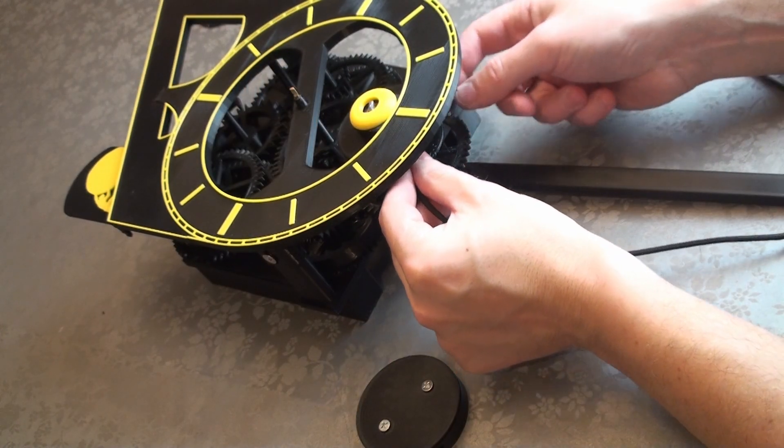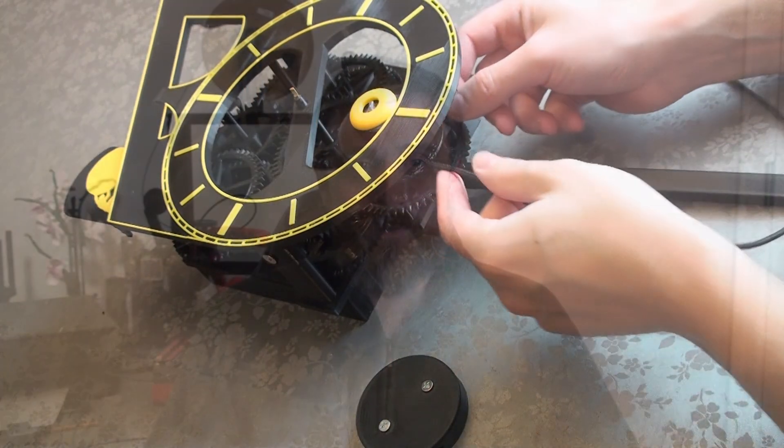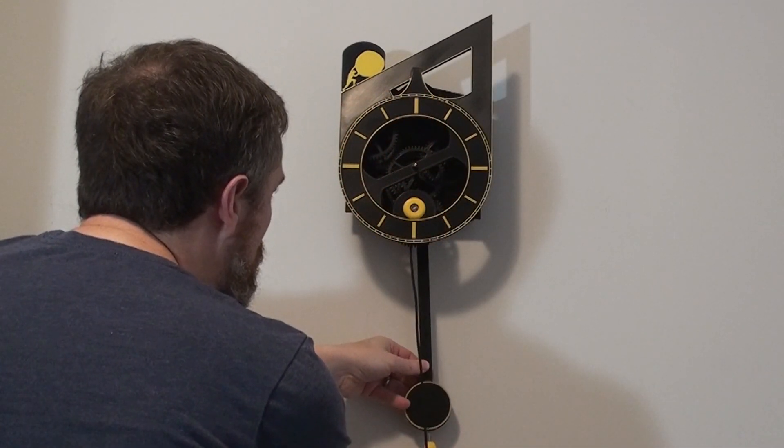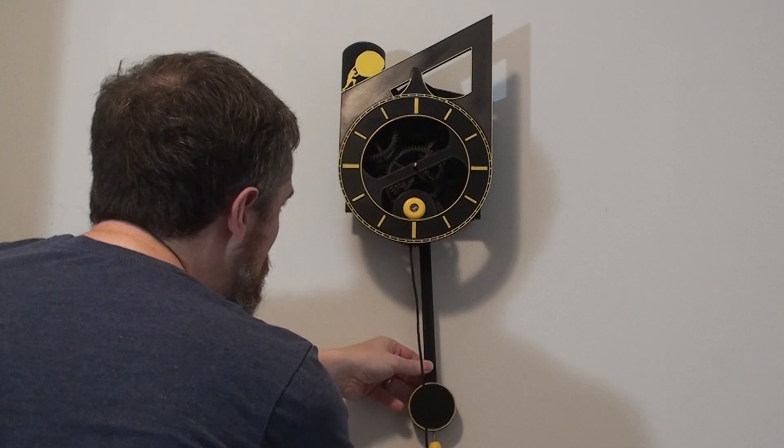Flip the clock over and attach the pendulum to the pendulum pallet shaft. Try to adjust it so that it swings evenly from side to side with the pallet when it's centered. The closer you are here, the easier it will be once it's on the wall. Lastly, go ahead and tie one end of your weight rope to the winding drum.